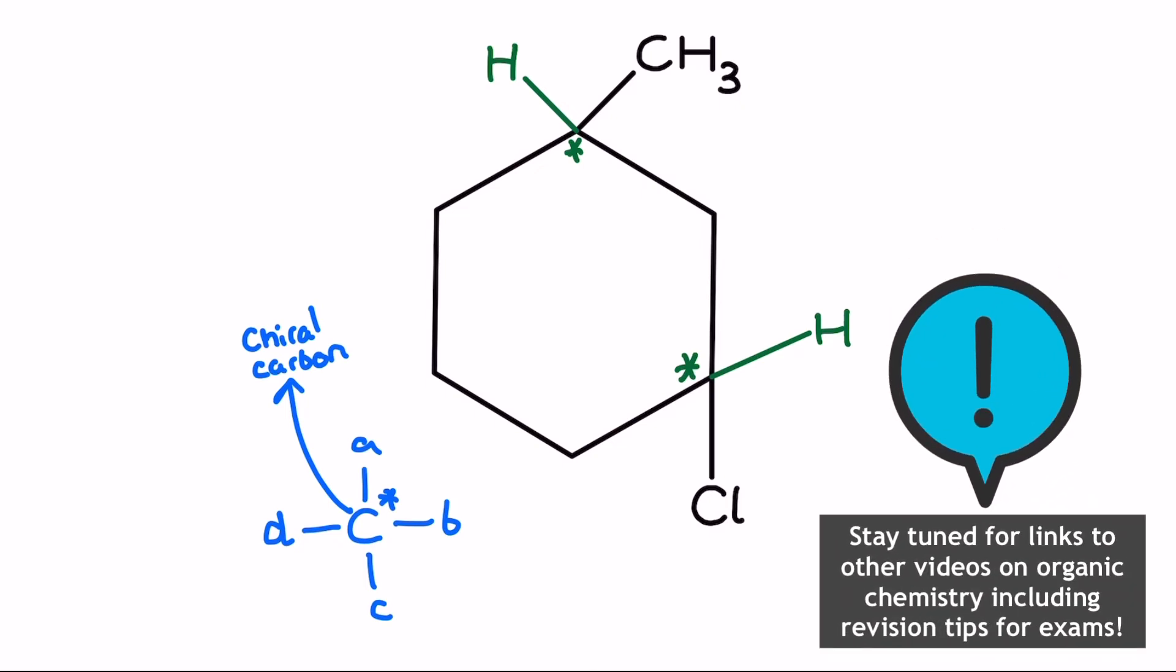So you can have chiral carbons on allocyclic rings, you just need to make sure that your ring is not symmetrical going round either direction from the carbon atom you're considering is chiral or not.